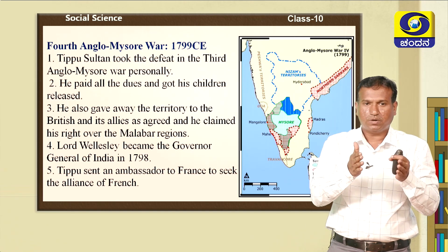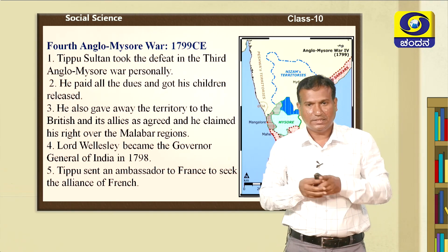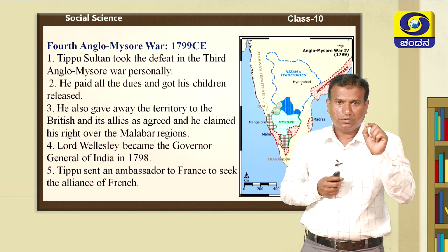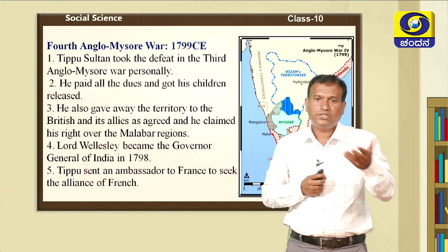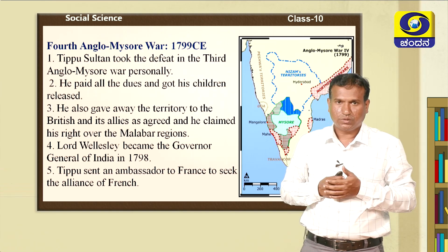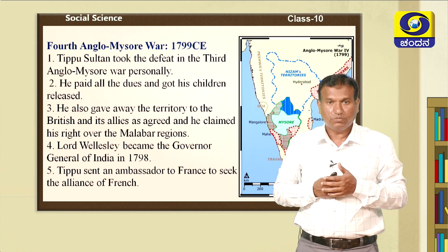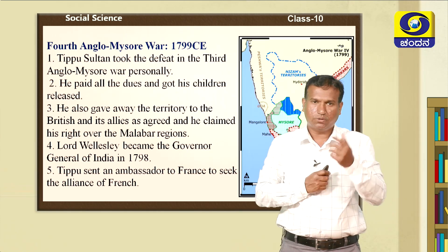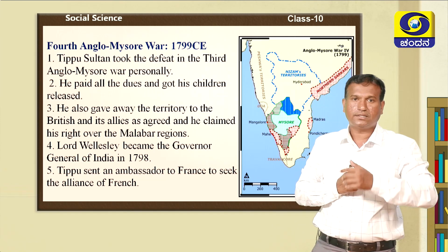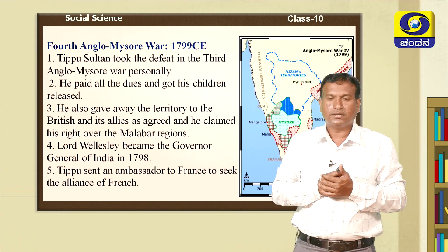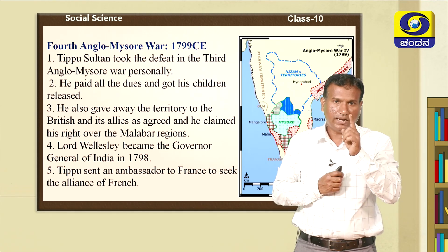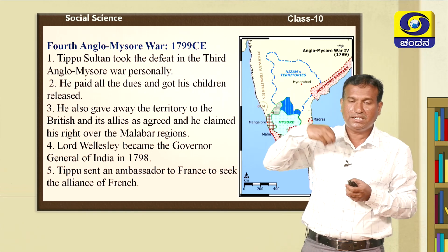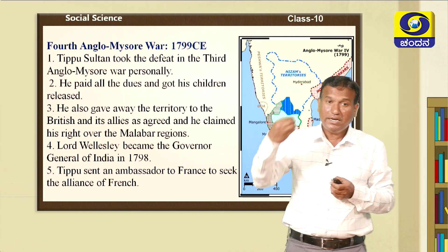The results of the Third Anglo-Mysore War led to the Fourth Anglo-Mysore War. Unlike the Treaty of Madras and Treaty of Mangalur — which were peace treaties with equal terms — the Treaty of Srirangapatna was completely in favour of the British and against Tipu Sultan. He had to give half his territory, surrender two children as hostages, and pay 3 crore rupees. Tipu Sultan felt it was a humiliation treaty, not a peace treaty.